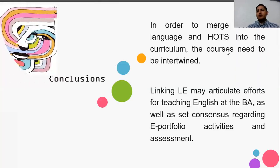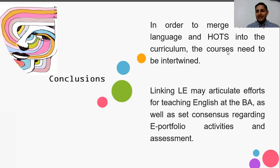Finally, my conclusions: in order to merge content, language, and higher order thinking skills into a curriculum, the courses need to be connected and linked; otherwise, it's going to be really complex. Articulating efforts in order to merge content, hearts, and language, we need to reach consensus regarding what a need portfolio is and to consolidate assessment criteria.